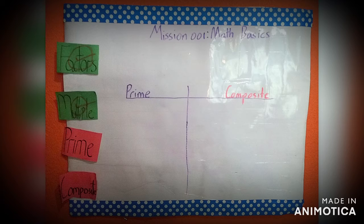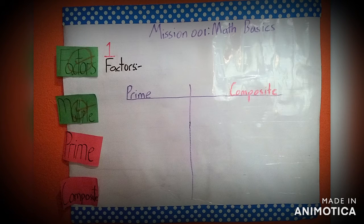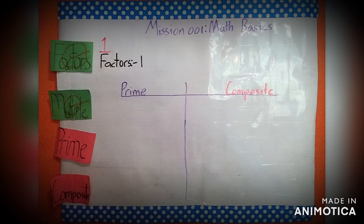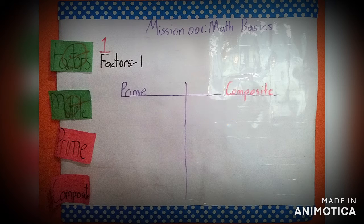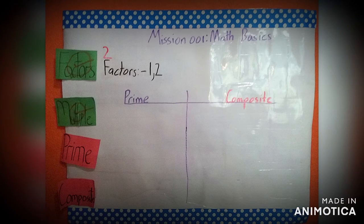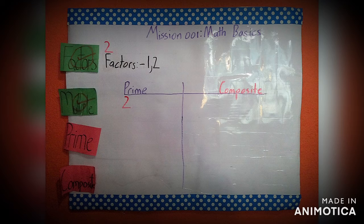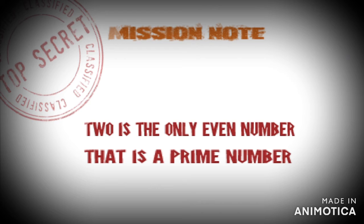We'll use a table to sort whether numbers are prime or composite, starting with the smallest counting number, which is 1. The factors of 1? Just 1. Since 1 only has 1 factor, it is neither a prime nor a composite number. Now let's move on to 2. The factors of 2 are 1 and 2, so 2 is a prime number as it only has 2 factors. First mission note: 2 is the only even number that is a prime number, because every other even number has 2 as a factor, meaning they all have at least 3 factors: 1, 2, and themselves.